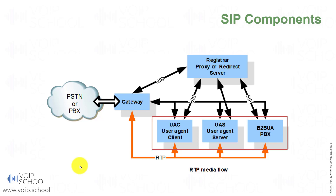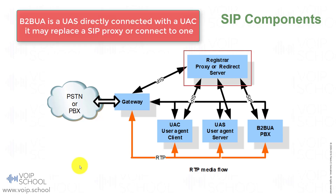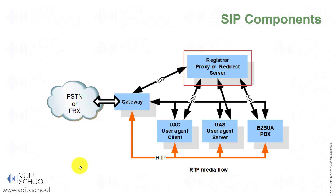In the middle of the signaling path is the SIP proxy. Usually the same server acts as a location, redirect, proxy, and back-to-back user agent. In the middle of the system, you always have this proxy and register — all the functions are in the server. Between the user agent client, user agent server, back-to-back user agent, and register, there is SIP signaling. The RTP, the real-time protocol responsible for media, flows directly between the components. So SIP is responsible only for the signaling, not for the media.